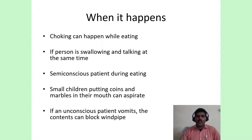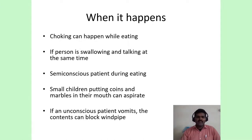When can choking or foreign body aspiration happen? It can happen while eating — if a person is swallowing and talking at the same time, there are high chances of the foreign body getting aspirated into the trachea. It happens in semi-conscious patients, especially alcoholic patients eating meat where the meatball can obstruct the trachea. Small children who put coins or marbles in their mouths can aspirate them. If an unconscious patient vomits, the contents can block the windpipe.